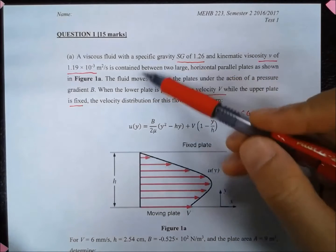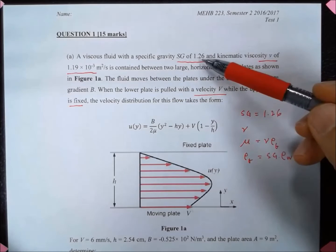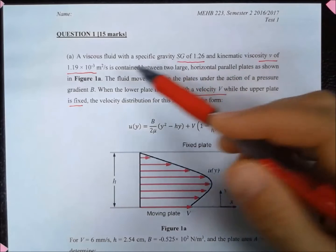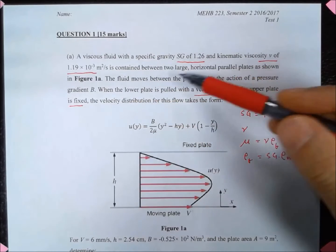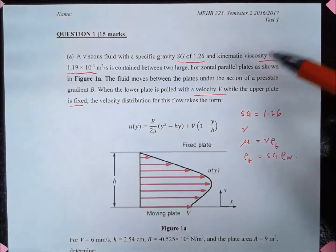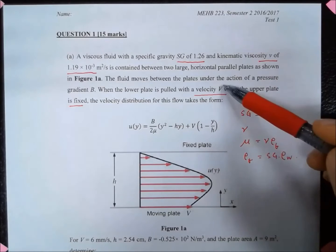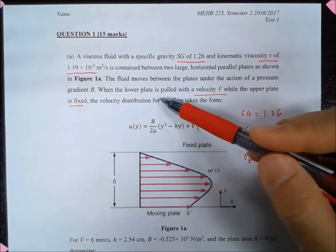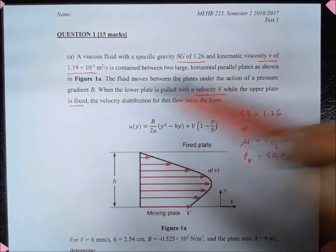Here we have a viscous fluid with a specific gravity Sg equal to 1.26 and kinematic viscosity nu of 1.19 times 10 to the minus 3 meter squared per second contained between two large horizontal parallel plates. The fluid moves between the plates under the action of a pressure gradient B which is a constant, and the lower plate is pulled with a velocity V while the upper plate is fixed.